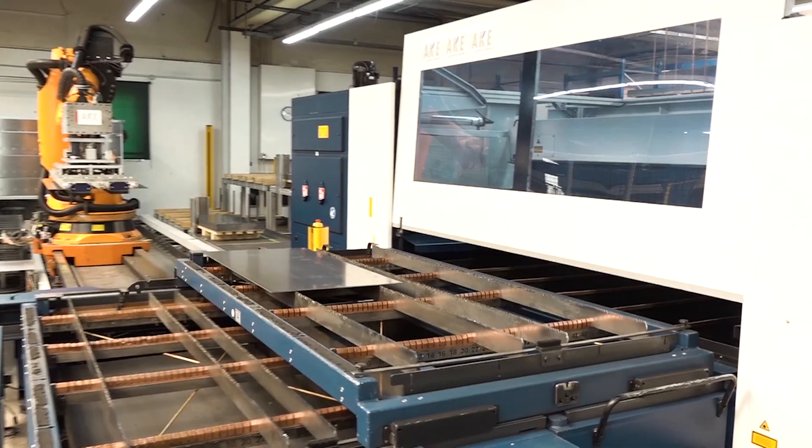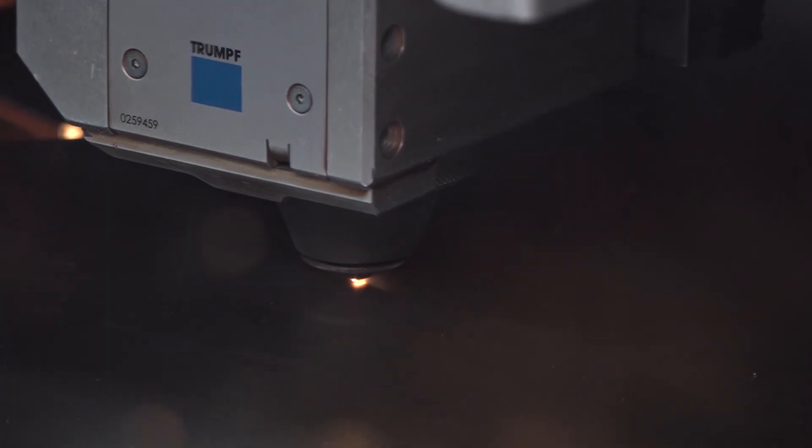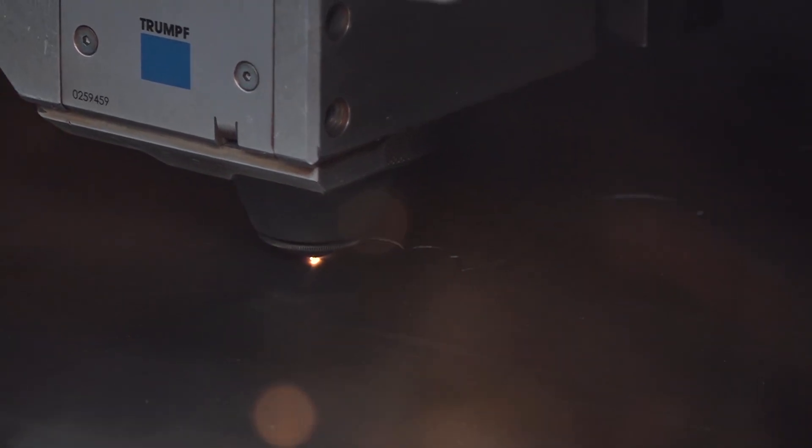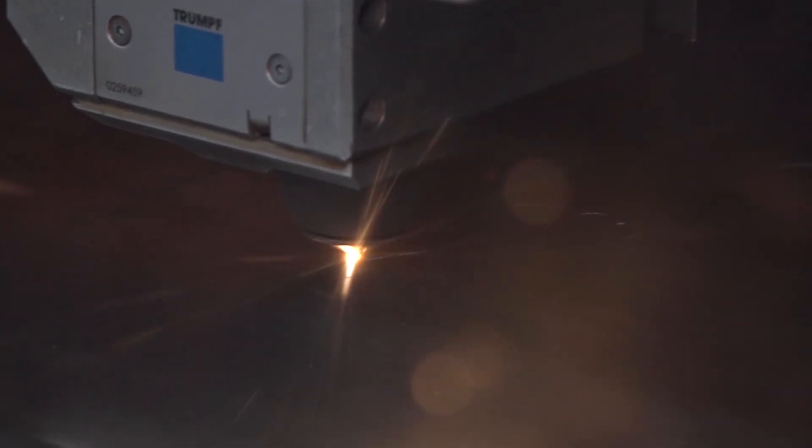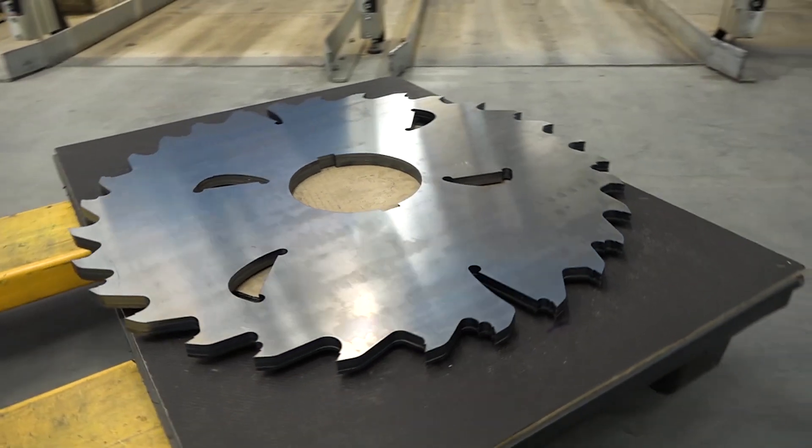First, the steel plate is taken to the laser system. Here, the circular saw blade is given its contour. The laser cuts through the steel plate precisely with a power of up to 5,000 watts.